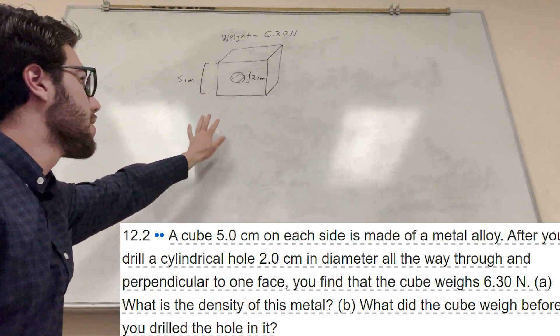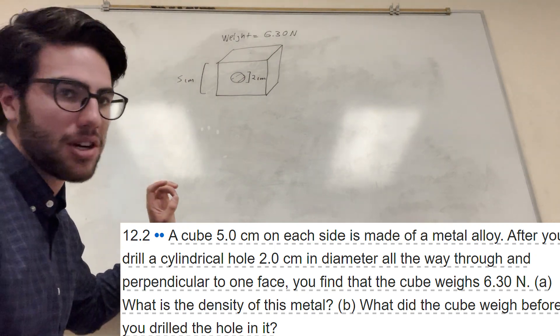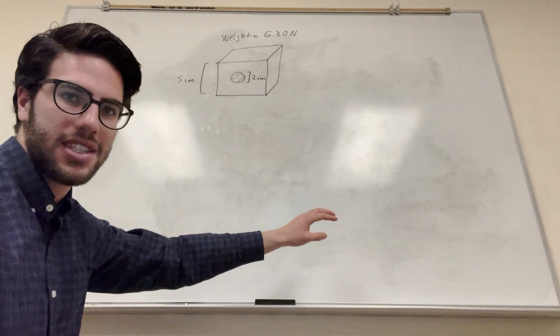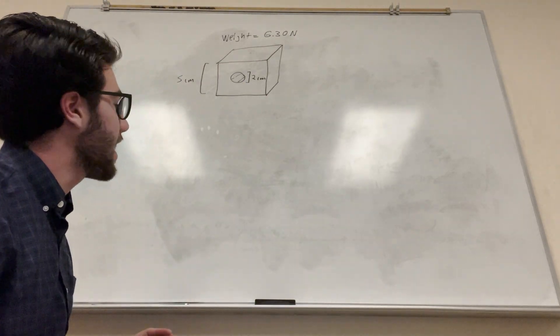So you got this cube, 5 centimeters by 5 centimeters by 5 centimeters. And then there's a hole with a diameter of 2 drilled all the way through it. And then what it gives you is the weight in newtons.